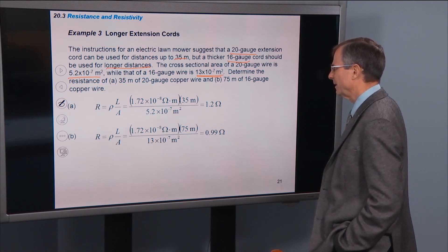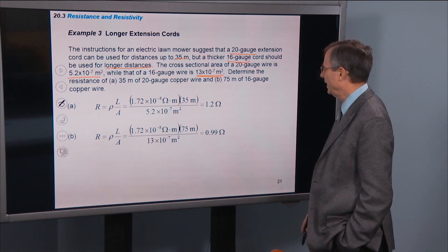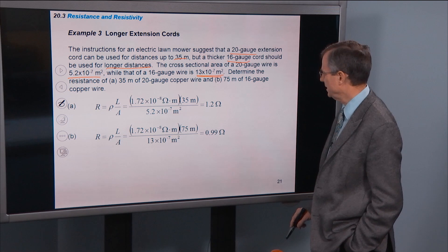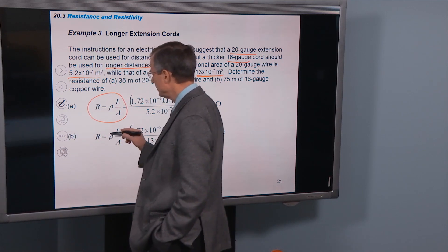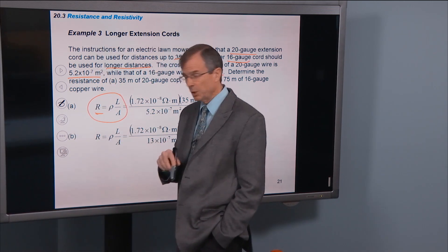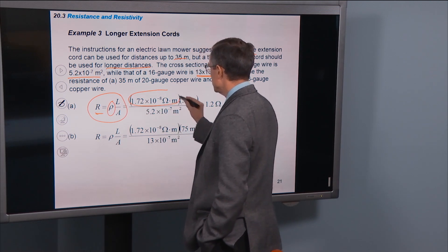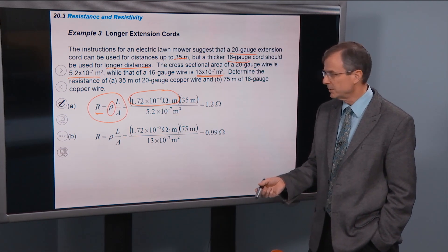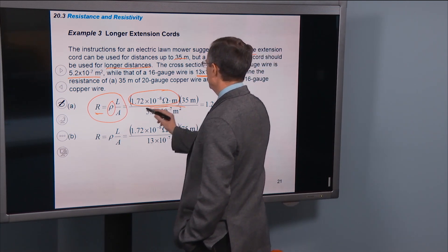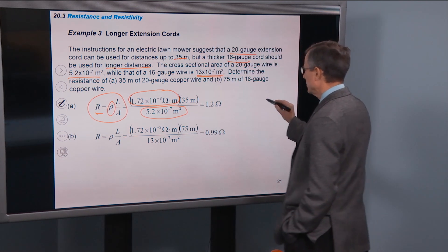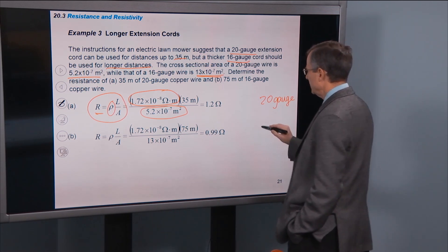Perfect. Determine the resistance of a 35 meter length of 20 gauge copper wire and a 75 meter length of 16 gauge copper wire. Well, it's easy. We just use this equation that we've written down for you. The resistance measured in ohms is the resistivity. And in this case, we're just going to use the number from that table. 1.72 times 10 to the minus 8 ohm meters divided by the cross-sectional area. In this case, 5.2 times 10 to the minus 7 is for the 20 gauge. And then this for the 16 gauge.